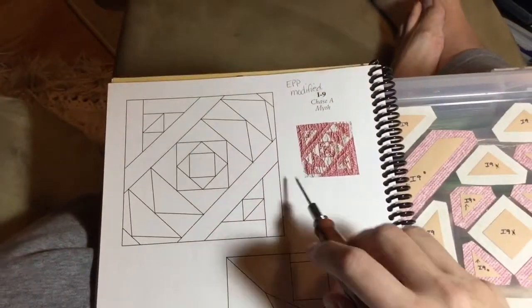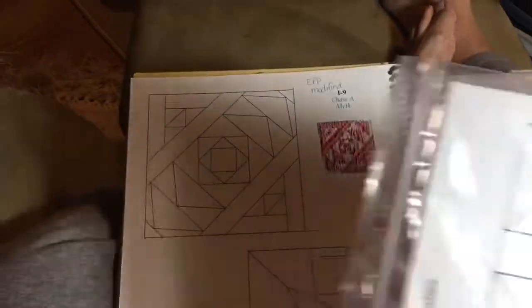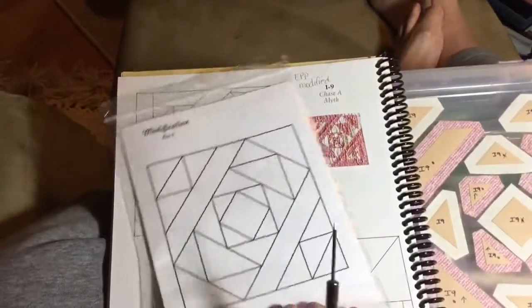Now we're on the I9 block, and the I9 block is an EPP modified block. So we're going to turn it into the booklet to see exactly where it is, and it's on this side.